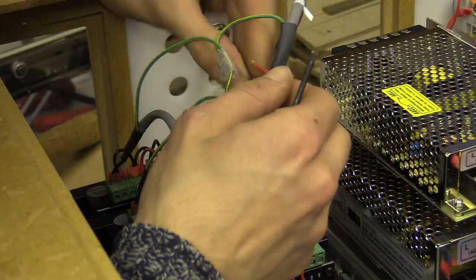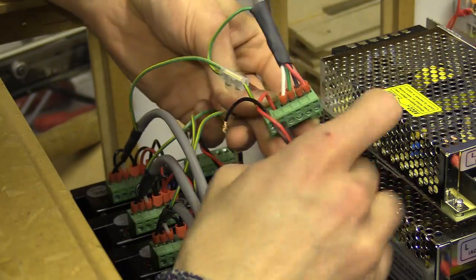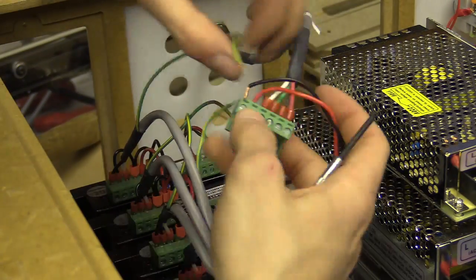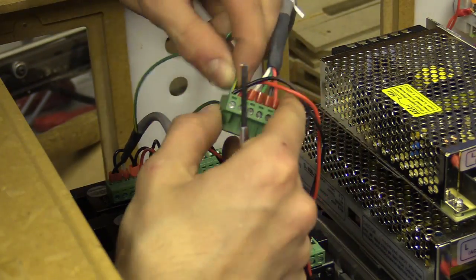I use a single cut piece of terminal block to join the screening ground from either side of the stepper driver to a single piece of wire that can fit into the appropriate terminal.